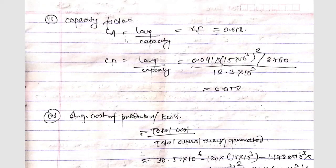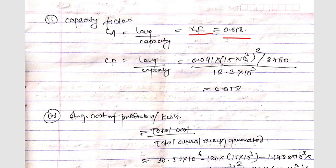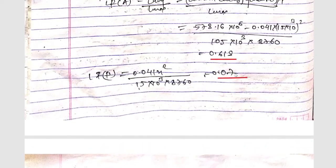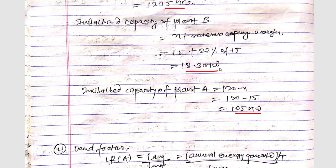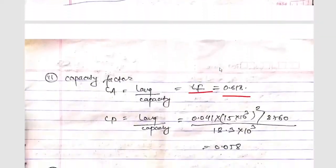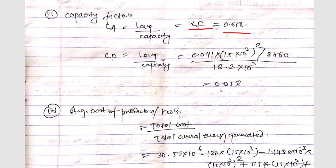For capacity factor, CA = L_average / installed capacity. For plant A this equals the load factor = 0.618. For plant B, capacity factor CB = 0.041X² (with X = 15 MW, converted to kW units) divided by 8760, over installed capacity 18.3 × 10³ kW, giving CB = 0.05.